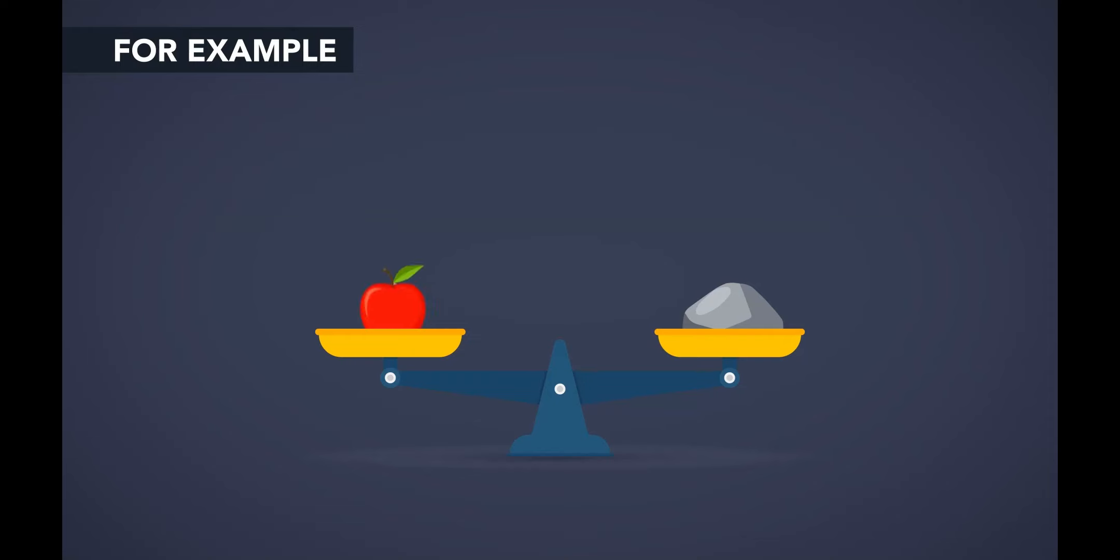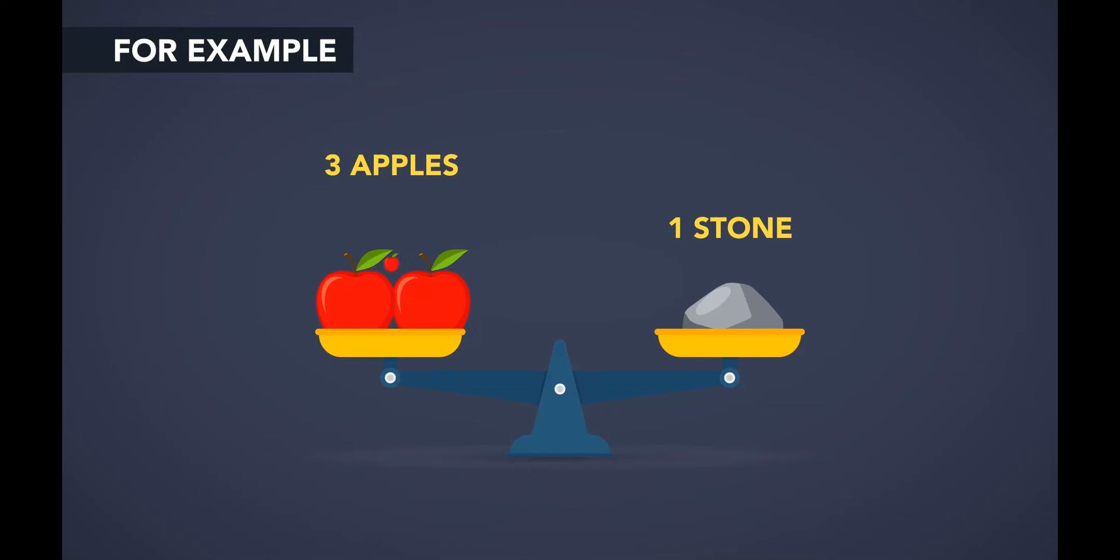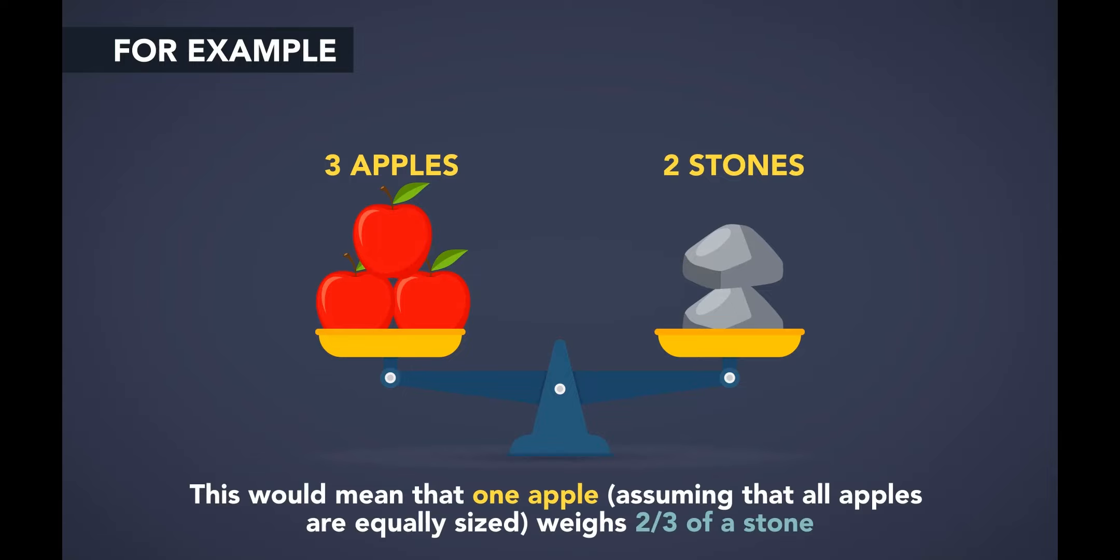For instance, if on the left side we have an apple and on the right side we have one stone with the scale balanced, it will mean that the apple has the same weight as one stone. This would mean that one apple, assuming that all apples are equally sized, would be one stone. Let's say instead that two apples are balanced with one stone equally. This would mean that one apple, assuming all apples are equally sized again, weighs half a stone. If we have three apples balancing with two stones, this would mean that each apple weighs two-thirds of a stone.